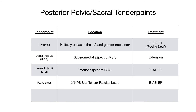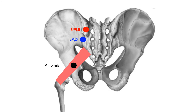Our next tender point is the PL3 gluteus tender point, also written as PL3, gluteus tender point, or gluteus medius PL3 — all referring to the same tender point. This is located two-thirds of the way between the PSIS and the tensor fascia latae. Treatment position is extension, abduction, external rotation — EABER. On the diagram, PL3 gluteus is shown in green, located about two-thirds of the way between the PSIS and the lateral part of the posterior pelvic region, where the tensor fascia latae would insert.